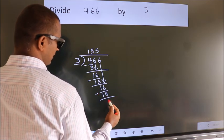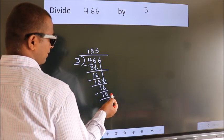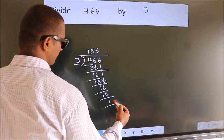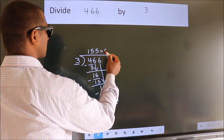Now we subtract. We get 1. No more numbers to bring it down. So we stop here. This is our remainder. This is our quotient.